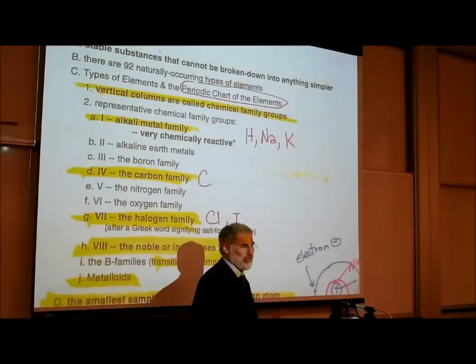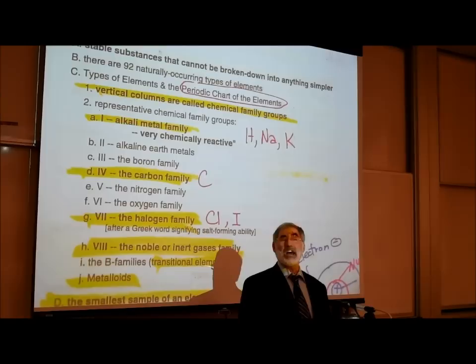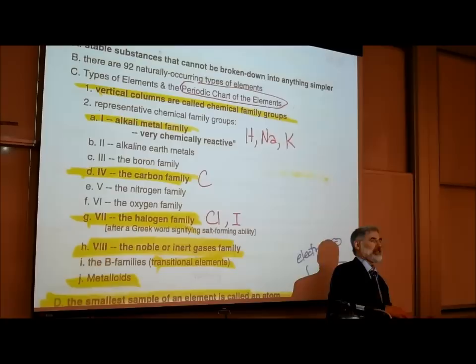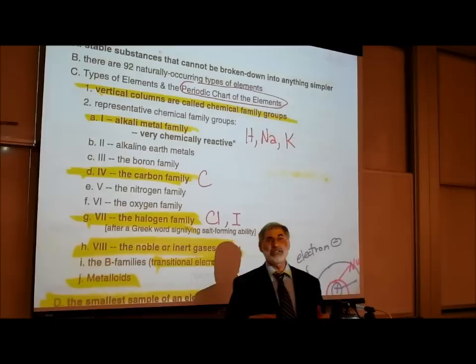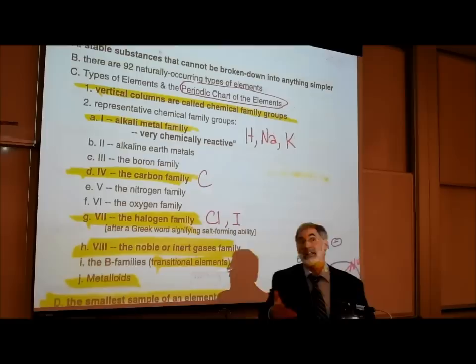There are about 92 naturally occurring different types of elements. These different types of elements include oxygen and carbon, gold and uranium, iron and iodine. You can see the periodic table of the elements there — that's a chart that shows all these different types of elements.